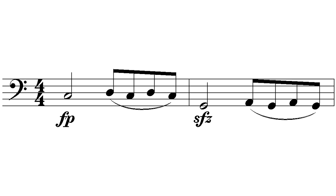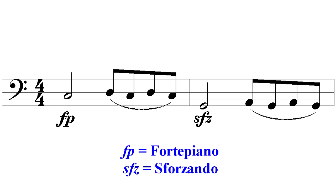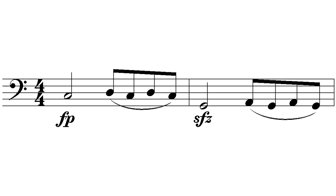Two other dynamic markings are fortepiano and sforzando. Fortepiano means play loud then suddenly get soft, and is not to be confused with the pianoforte instrument name. Sforzando is similar, but played even louder initially with more force.